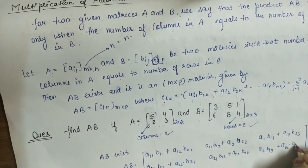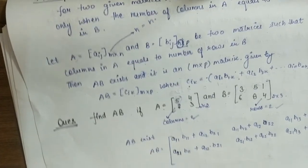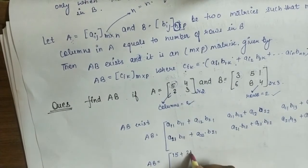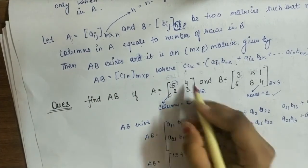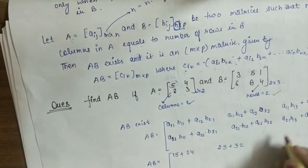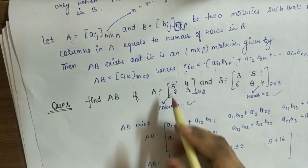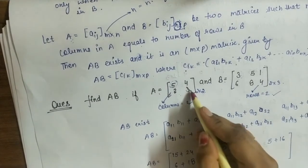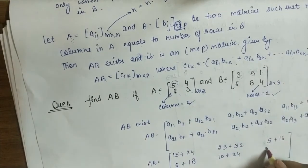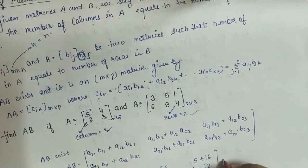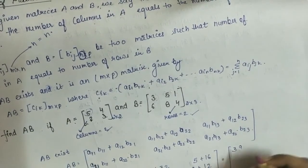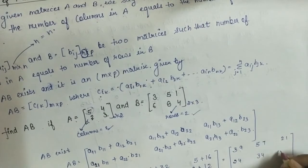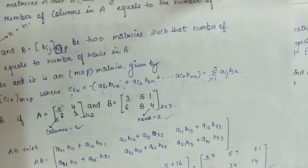AB equals: 5×3=15, plus 4×6=24, giving 39; 5×5=25 plus 4×8=32, giving 57; 5×1=5 plus 4×4=16, giving 21; 2×3=6 plus 3×6=18, giving 24; 2×5=10 plus 3×8=24, giving 34; 2×1=2 plus 3×4=12, giving 14. So AB = [39, 57, 21; 24, 34, 14] is the product of matrices A and B.